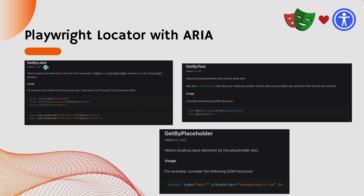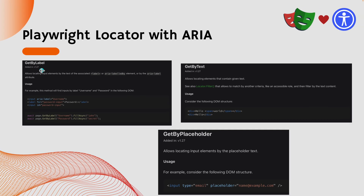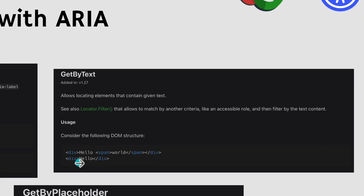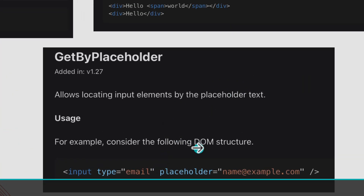The getByLabel method identifies a control using a label, aria-labelledby, or aria-label. If your application doesn't have aria-labelledby or aria-label, it will take the label itself to identify the component. Most applications will have at least an input with ID equal to 'password-input'. Similarly, getByText works even if you have a div with text like 'hello'. And getByPlaceholder works based on the placeholder value defined within your control.